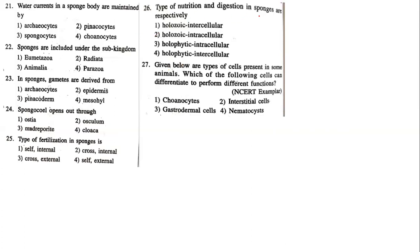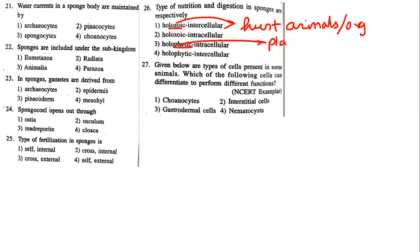Question on nutrition and digestion in sponges respectively. Holozoic means which eats animals or other organisms. Holophytic means plant-based nutrition. Intercellular means between two different cells; intracellular means within the cell. The answer is holozoic and intracellular. Sponges eat organisms — not plants — so it is holozoic. And digestion happens within the cell, so it is intracellular, not intercellular.